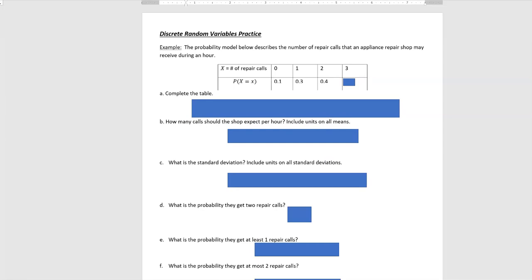Hi, it's Carly McEvoy. Today we're talking about discrete random variables and getting some practice using those. In the model below, the number of repair calls that an appliance repair shop gets per hour is displayed, and we are asked